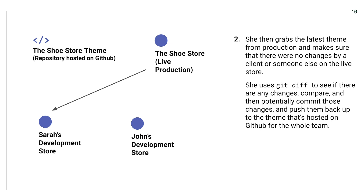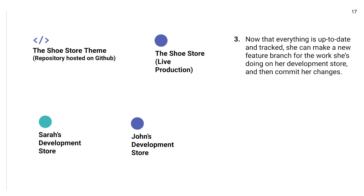Sarah would also want to grab the latest theme from production and make sure there were no changes made by a client or someone else on the live store that she might not be aware of. Somebody might have made a change on that live production site that wasn't reflected in the GitHub repository. So she would run git diff to see if there are any changes and compare them. If there are changes, they're likely in the settings_schema.json file. If they're in other files, that means somebody's been editing in the online code editor, likely. She wants to make sure she tracks those changes and potentially commits and pushes them back up to the repository hosted on GitHub so the whole team has access.